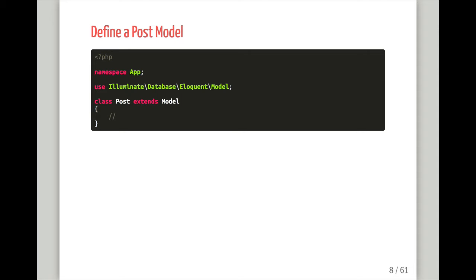Here's how we define a model. You should be aware that there are migrations — a way to define your database structure with PHP code. You can say, create a posts table with a title, description, body, timestamps, and maybe a published_at date. You define that in your migration, run it, and your database table gets built. Then this is how you use that table in your application — by defining the model that represents the posts table.